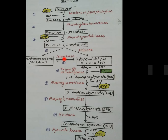Glyceraldehyde-3-phosphate to 1,3-bisphosphoglycerate: enzyme is triose phosphate dehydrogenase. 1,3-bisphosphoglycerate to 3-phosphoglycerate: enzyme is phosphoglycerokinase. 3-phosphoglycerate to 2-phosphoglycerate: enzyme is phosphoglyceromutase. 2-phosphoglycerate to phosphoenolpyruvate by removal of one water molecule: enzyme is enolase. Phosphoenolpyruvate to pyruvate: enzyme is pyruvate kinase.